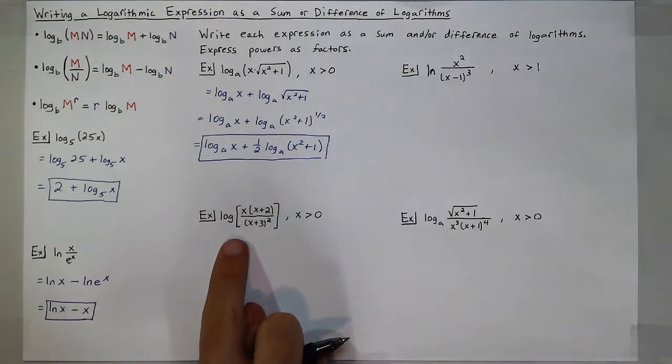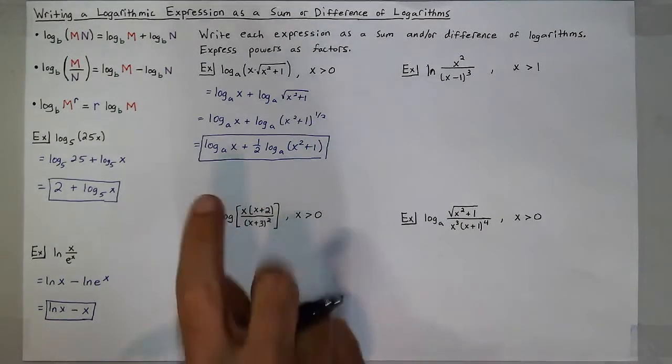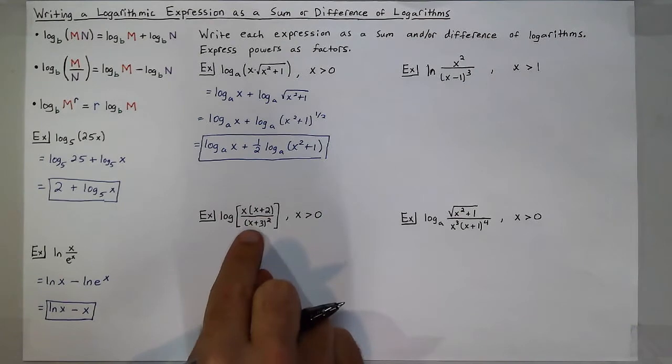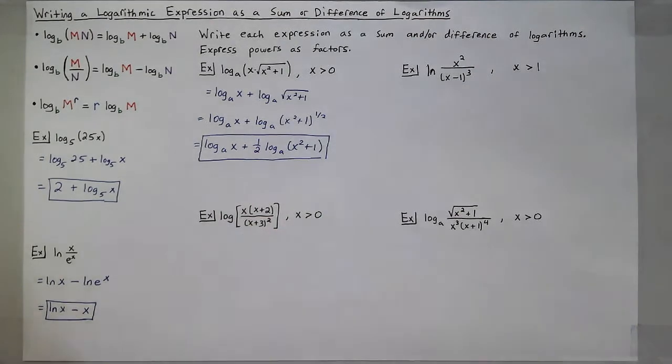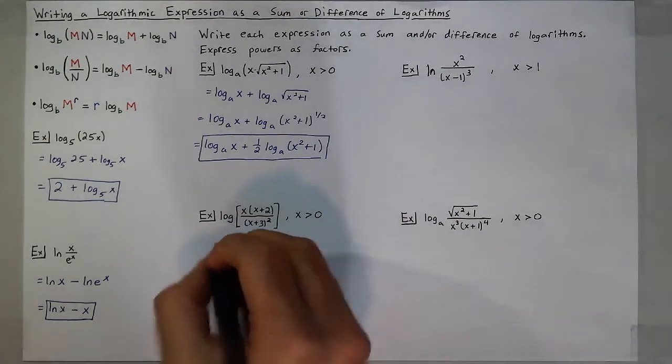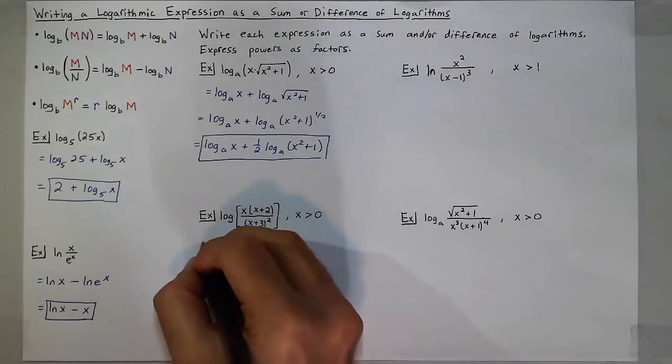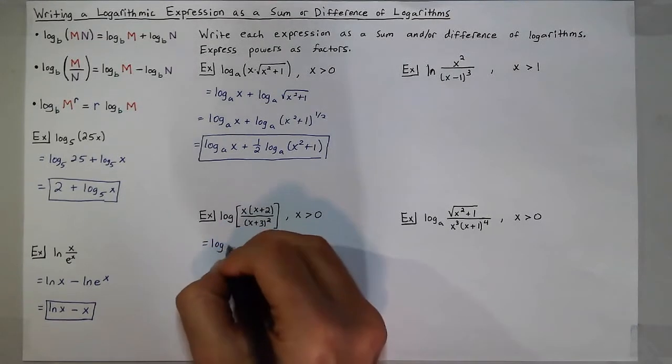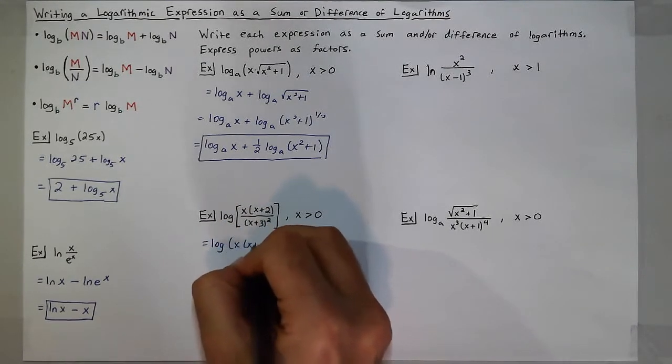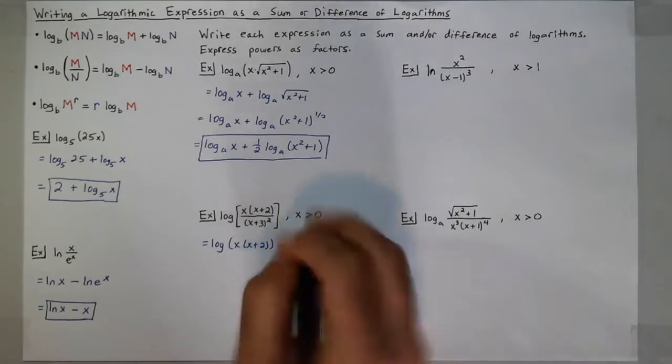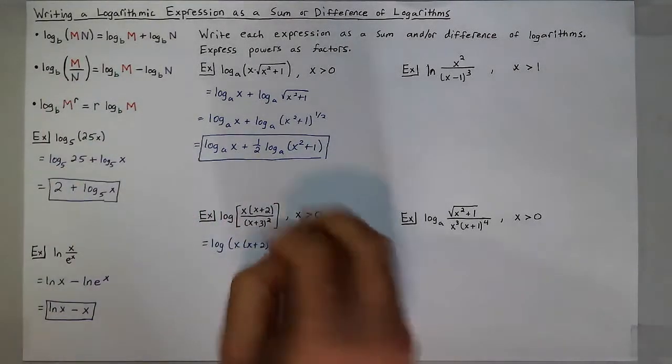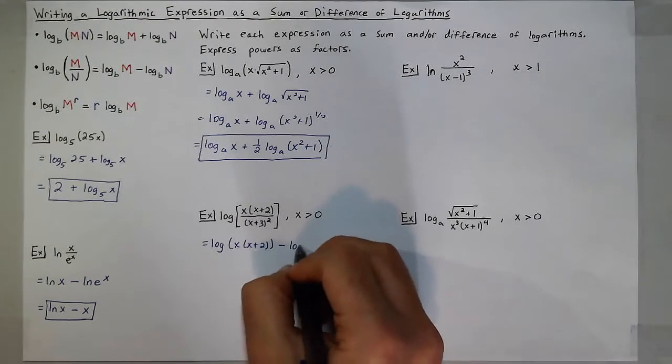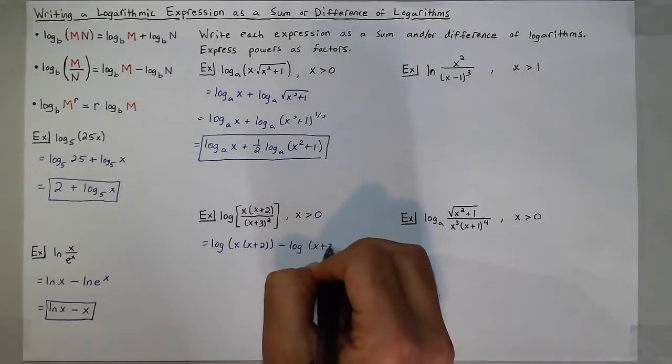Now, next up, let's say I have log of x times x plus 2 over x plus 3 squared, as long as x is greater than 0. This can work. But I have division, so I can first separate this as log of x times x plus 2 minus, because I have division here, minus log of x plus 3 squared.